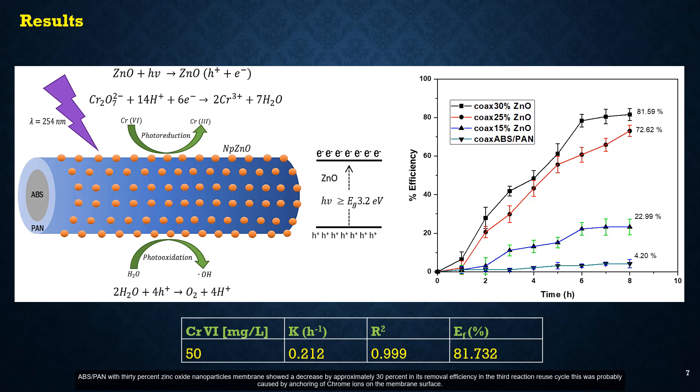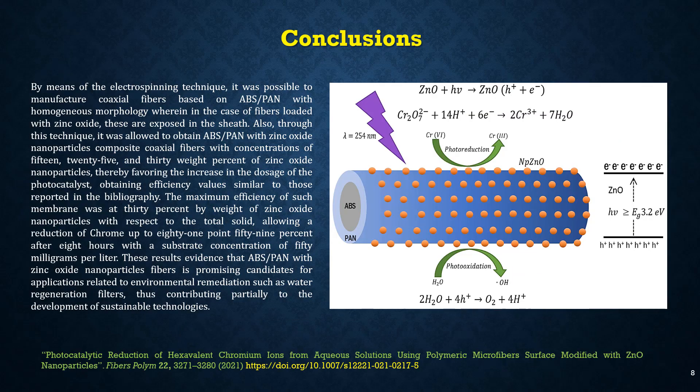ABS polymer with 30% zinc oxide nanoparticles membrane showed a decrease by approximately 30% in its removal efficiency in the third reaction reuse cycle. This was probably caused by the adsorption of chrome ions on the membrane surface. By means of the electrospinning technique, it was possible to manufacture coaxial fibers based on ABS polymer with homogeneous morphology, where in the case of fibers loaded with zinc oxide, they are exposed in the shell. Also, through this technique, it was possible to obtain ABS polymer with zinc oxide nanoparticles composite coaxial fibers with concentrations of 15, 25, and 30% of zinc oxide nanoparticles, thereby favoring the increase of the dosage of photocatalyst, obtaining efficiency values similar to those reported in the bibliography.